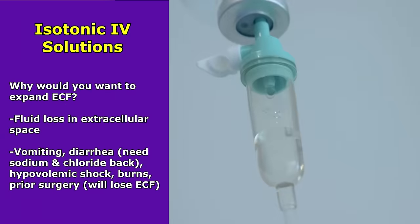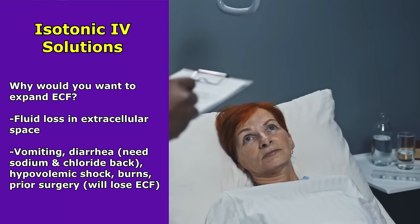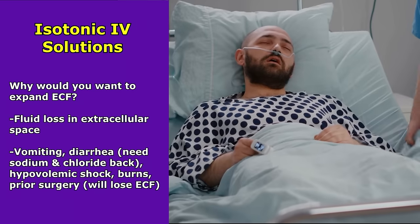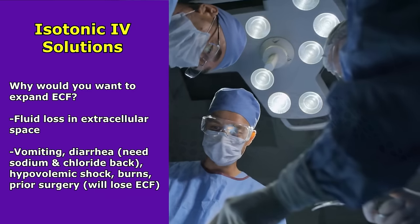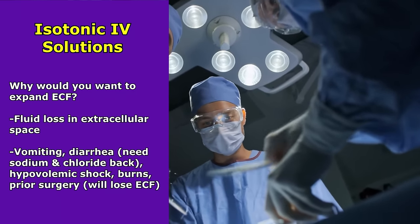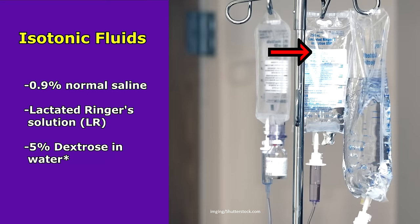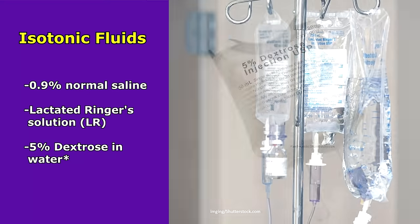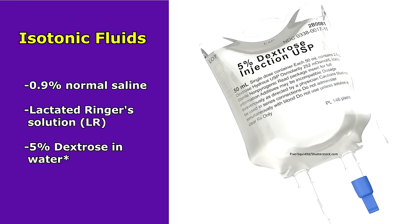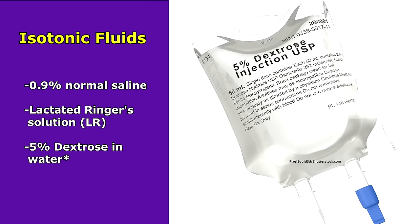Why would we want to expand the extracellular fluid? Well, if the patient is experiencing a fluid loss in this space — like through vomiting, diarrhea, they need some sodium and chloride replaced — or they're experiencing hypovolemic shock, burns, or maybe they're going to have surgery where we know they'll be losing a lot of blood, that extracellular fluid. Some fluids considered isotonic are normal saline, lactated Ringer's solution (also called LR), and 5% dextrose in water.